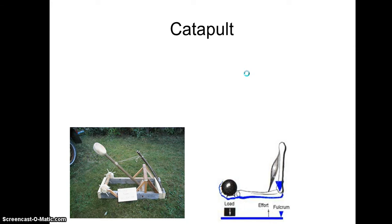The catapult shown here often, but not always, is a third class lever. Third class lever has the load on one end, the fulcrum on the other, and then the effort is applied somewhere in the middle. Here on the catapult, this particular type, the load would be placed here.